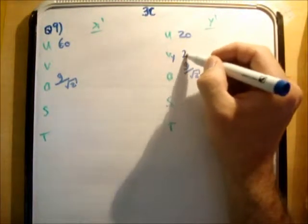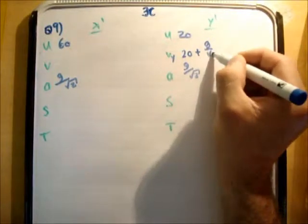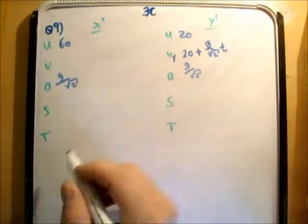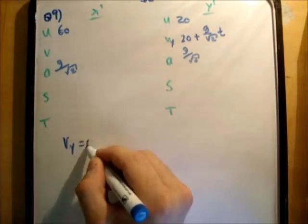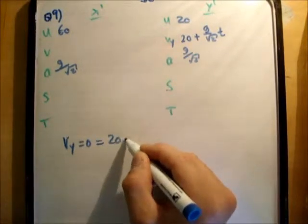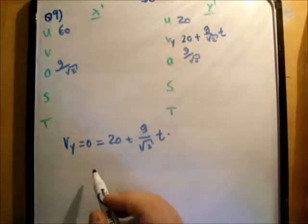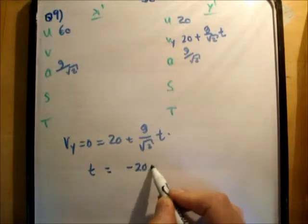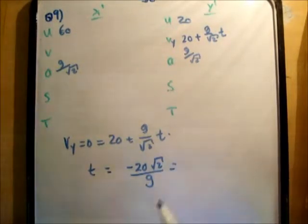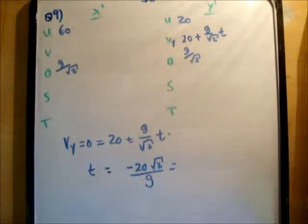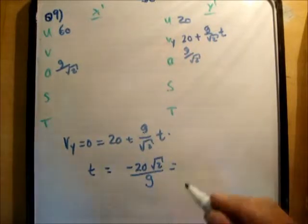So we need to find the time when v sub y is equal to 0. So v sub y is equal to u plus at. So v sub y equals 0 is equal to 20 plus g over root 2 times t. And therefore t is equal to minus 20 root 2 over g. And that's equal to, of course that's a positive number, because g is a negative number and two negatives make a positive. So 20 root 2 divided by 9.81 gives an answer of 2.88.